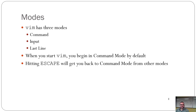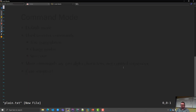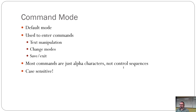Vim has three modes: command, input, and last line. When you start Vim, you are in command mode. If you are in any other mode, you hit Escape and it brings you back to command mode. In command mode, you can use text manipulation commands — insert, append, replace, search and replace. Most commands are alpha characters, not control sequences, and the commands are case-sensitive because this is Linux and everything is case-sensitive.